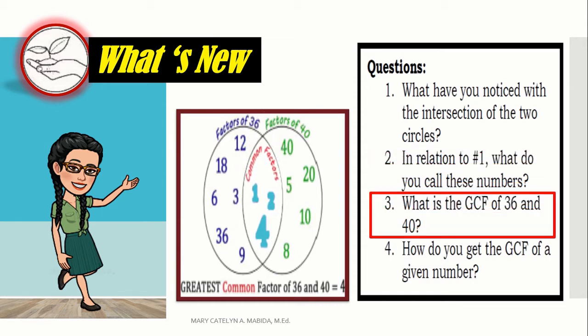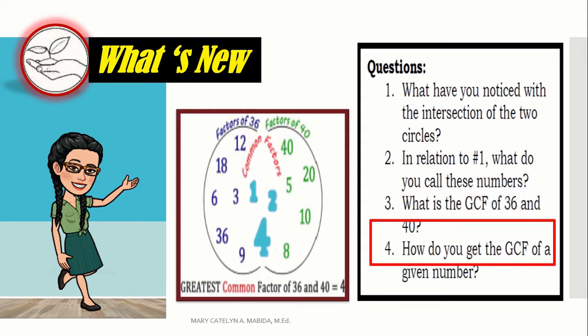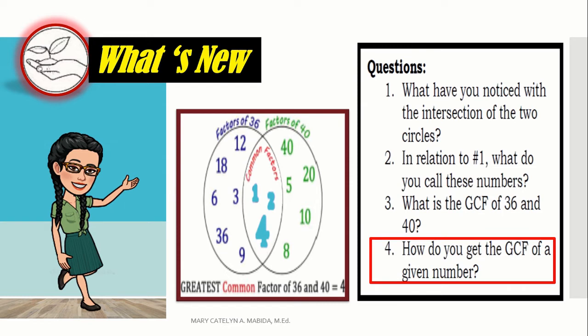Number 3. What is the GCF of 36 and 40? Great job! It is 4. And lastly, how do you get the greatest common factor of a number? Let's talk about that in the next part of the video.